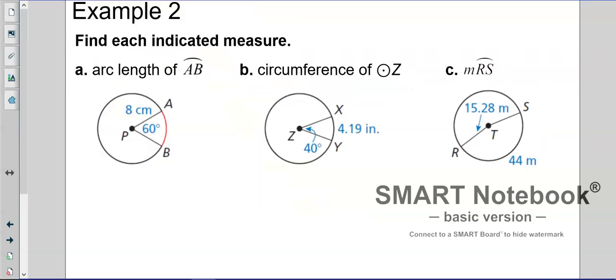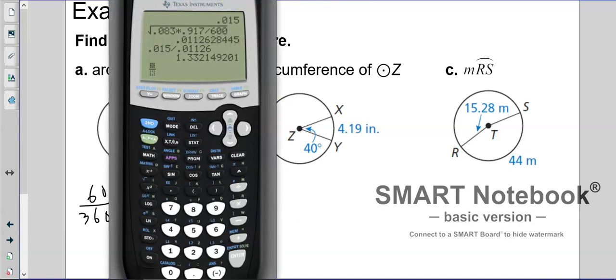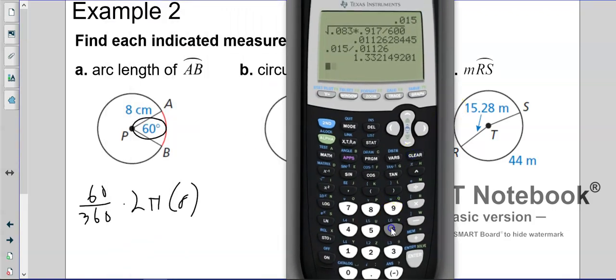So here we go. So we take the 60, and we're going to divide it by 360, and then multiply by 2 times pi times r. So you can just type this right in your calculator. Now, there's two ways to do this, and we'll talk about that. So you can just type in 60 divided by 360. I'm not going to do this on all of them, but just to show you on the first one. Then just right away, times 2 times 8 times pi.